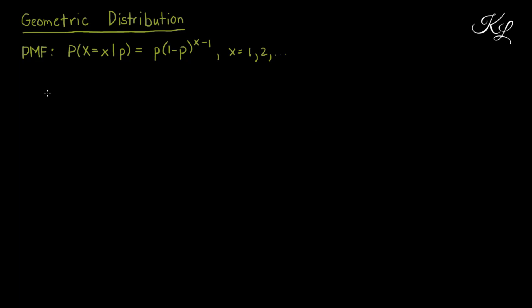Hello everyone. In this video I'm going to show you how to derive the mean, the variance, and the moment generating function for the geometric distribution. The probability mass function for the geometric distribution is: P(X = x | p) = p times (1-p)^(x-1), defined for x equals 1 to infinity. Now let's derive the mean. The mean is equal to E[X], which is the summation of x times the PMF — p times (1-p)^(x-1) — from x equals 1 to infinity.